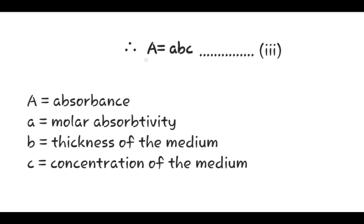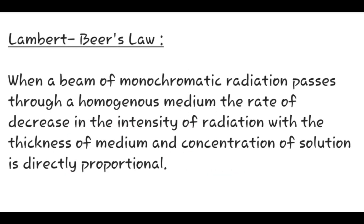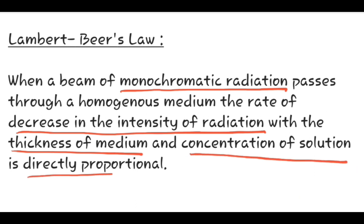In this equation, A is equal to absorbance, which is log I₀ upon I_T. Small a is equal to molar absorptivity, which is the product of the two proportionality constants K' and K'' double dash. B is the thickness of the medium and C is the concentration of the medium. The final statement of Lambert-Beer's Law is that when a beam of monochromatic radiation passes through a homogeneous medium, the rate of decrease in the intensity of the radiation with the thickness of the medium and concentration of the solution is directly proportional. Thank you.